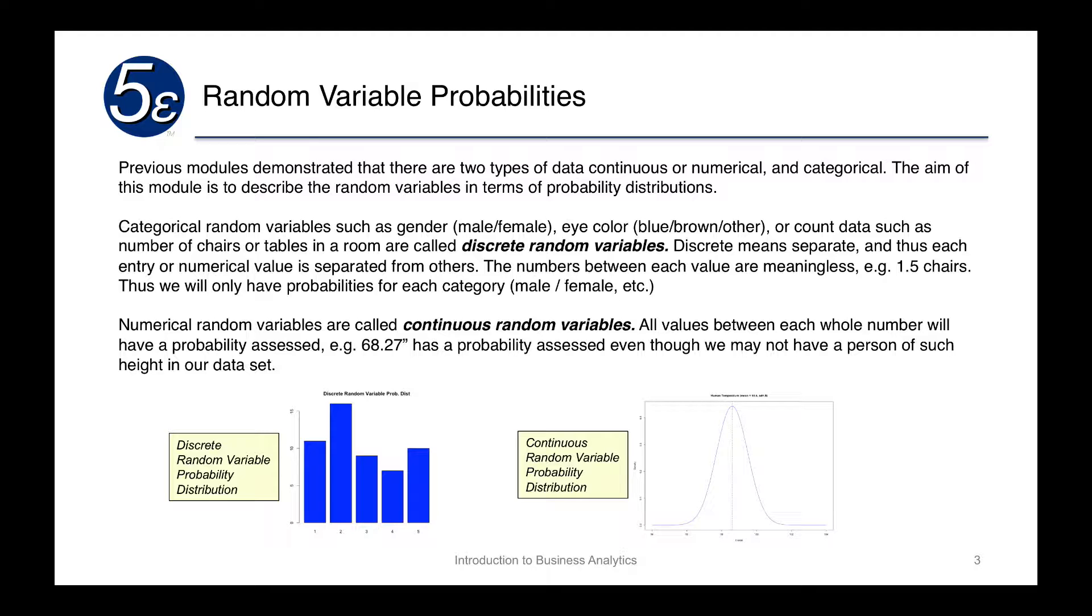Categorical random variables, such as gender and eye color, or other count data, such as number of chairs or tables in a room, are called discrete random variables. Remember that discrete means separate, and thus each entry or numerical value is separated from the others. The numbers between the whole numbers are meaningless, such as one and a half chairs.